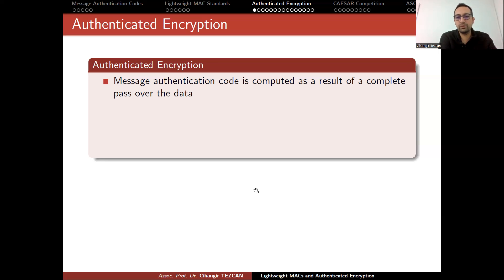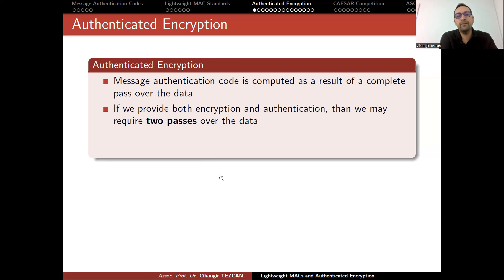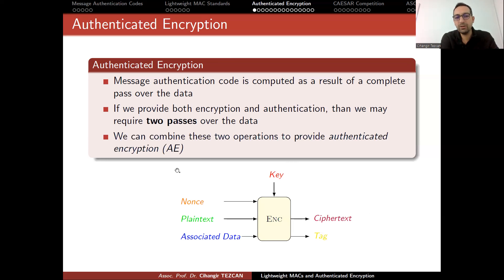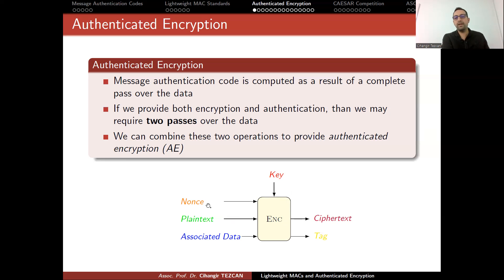A message authentication code is computed as a result of a complete pass over the data. If we provide both encryption and authentication, we may require two passes over the data — one for encryption and one for message authentication. We can combine these two operations to provide authenticated encryption. In this scenario, instead of just a key and plaintext as input as in block ciphers, we have more input.